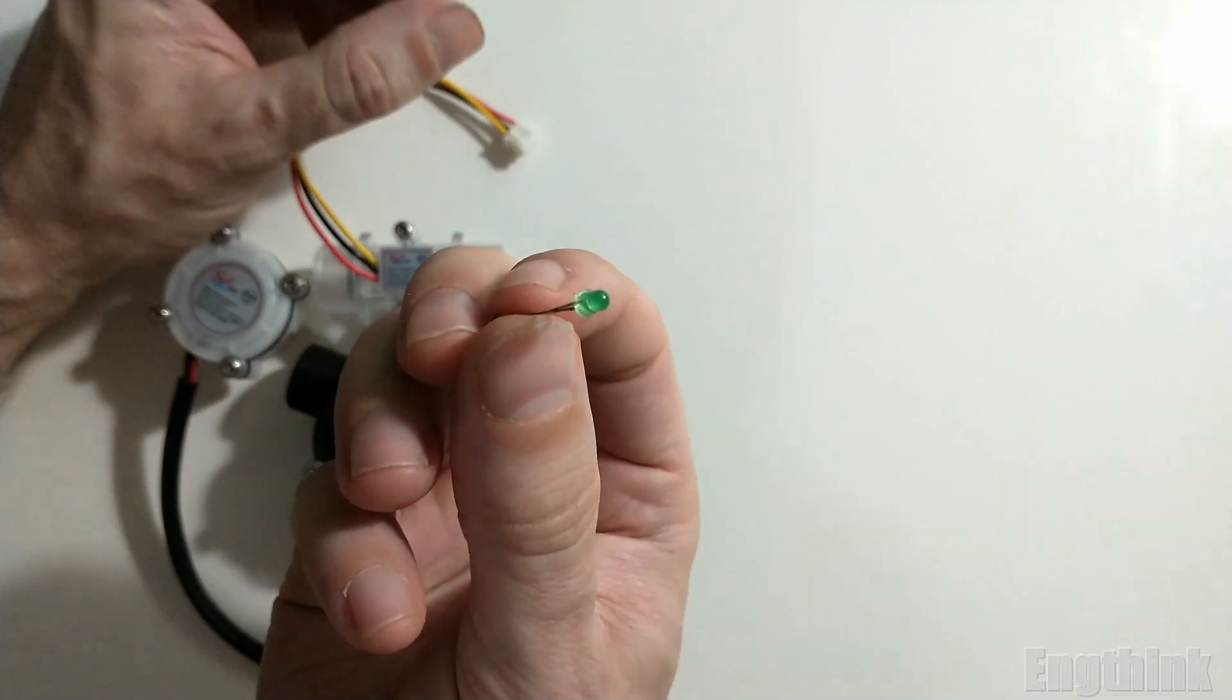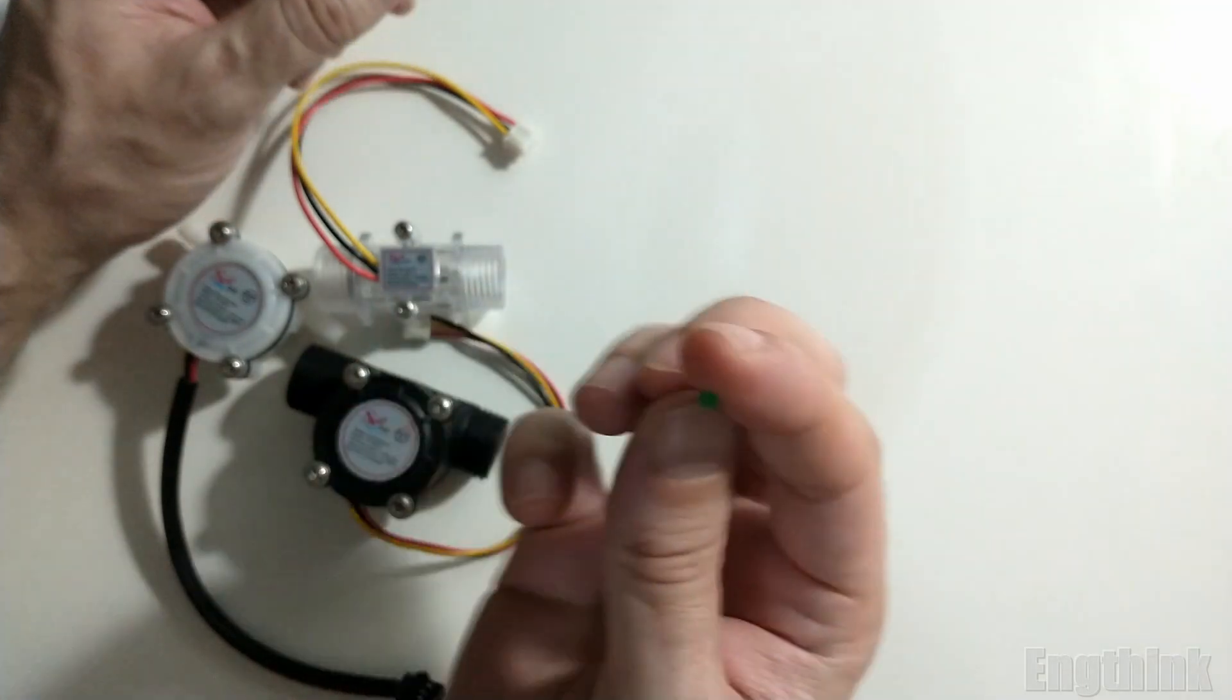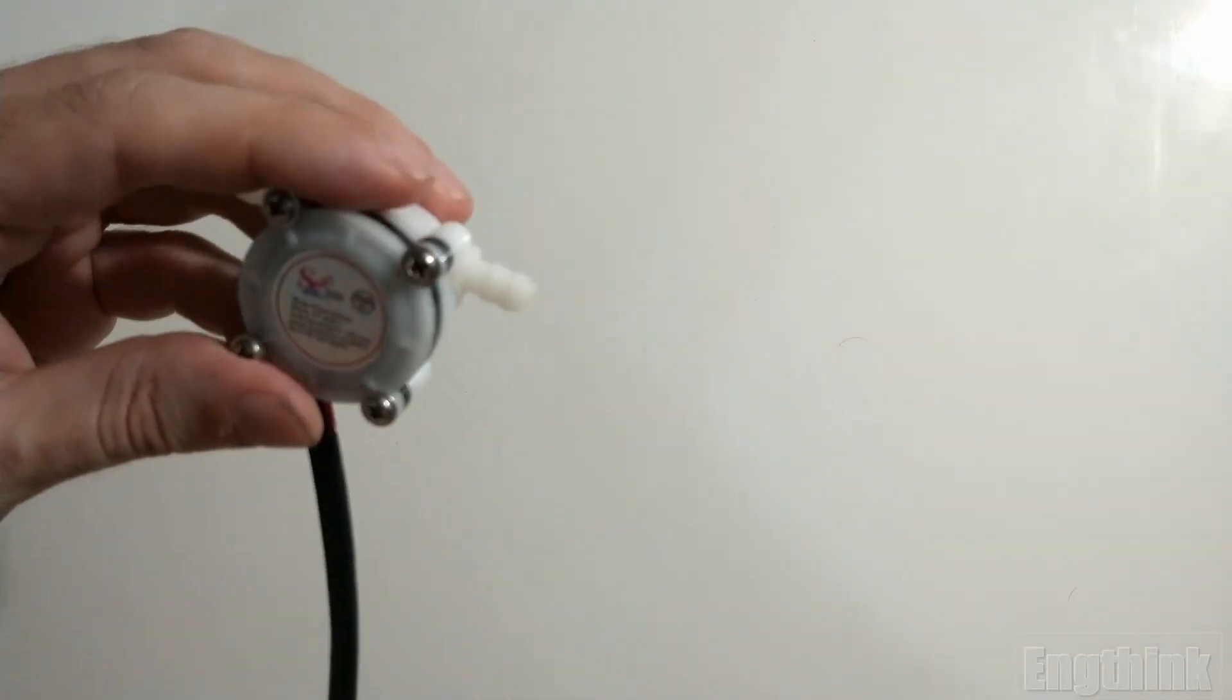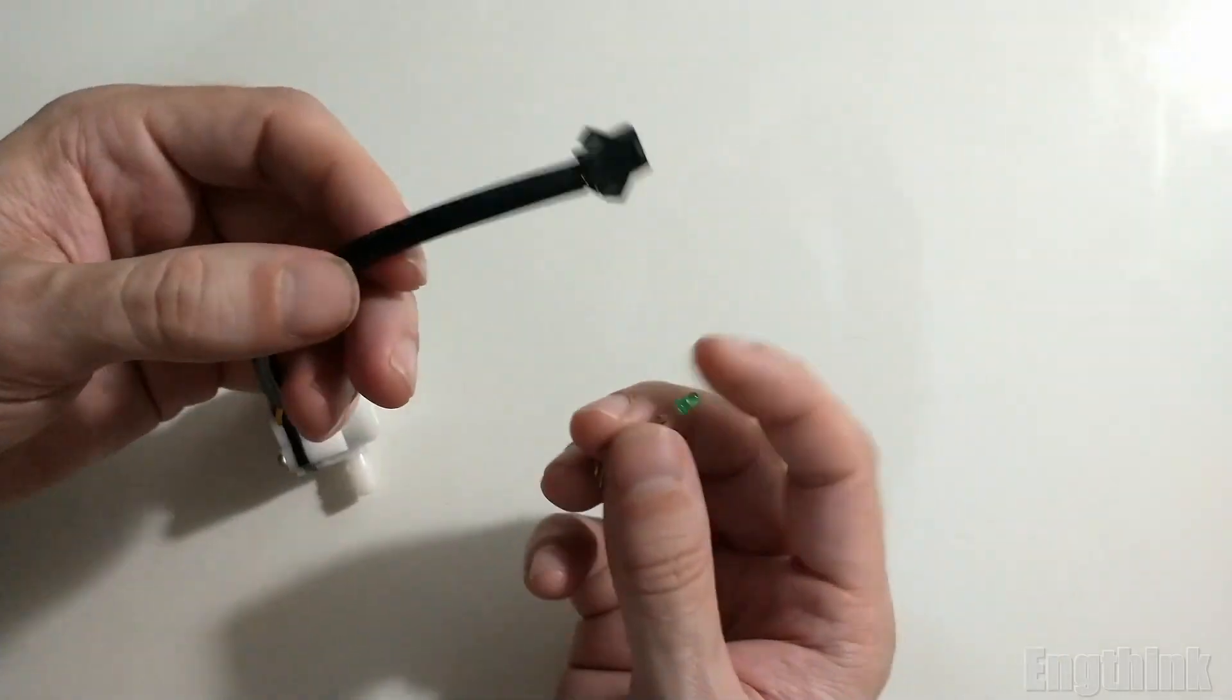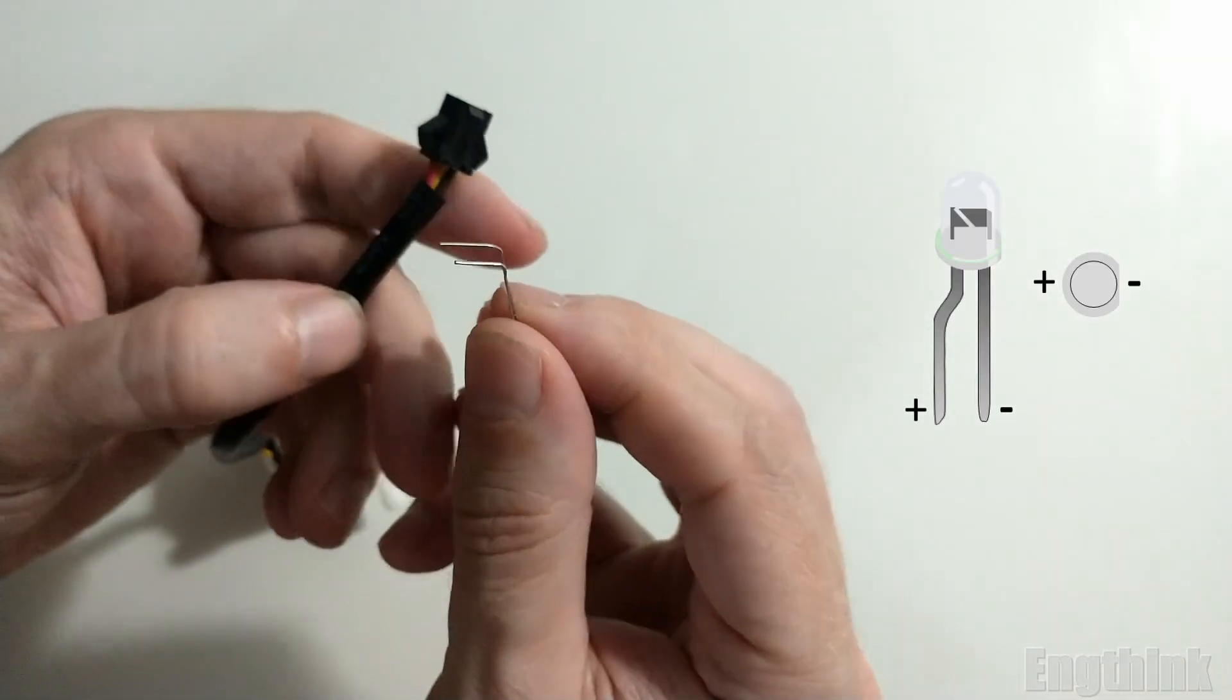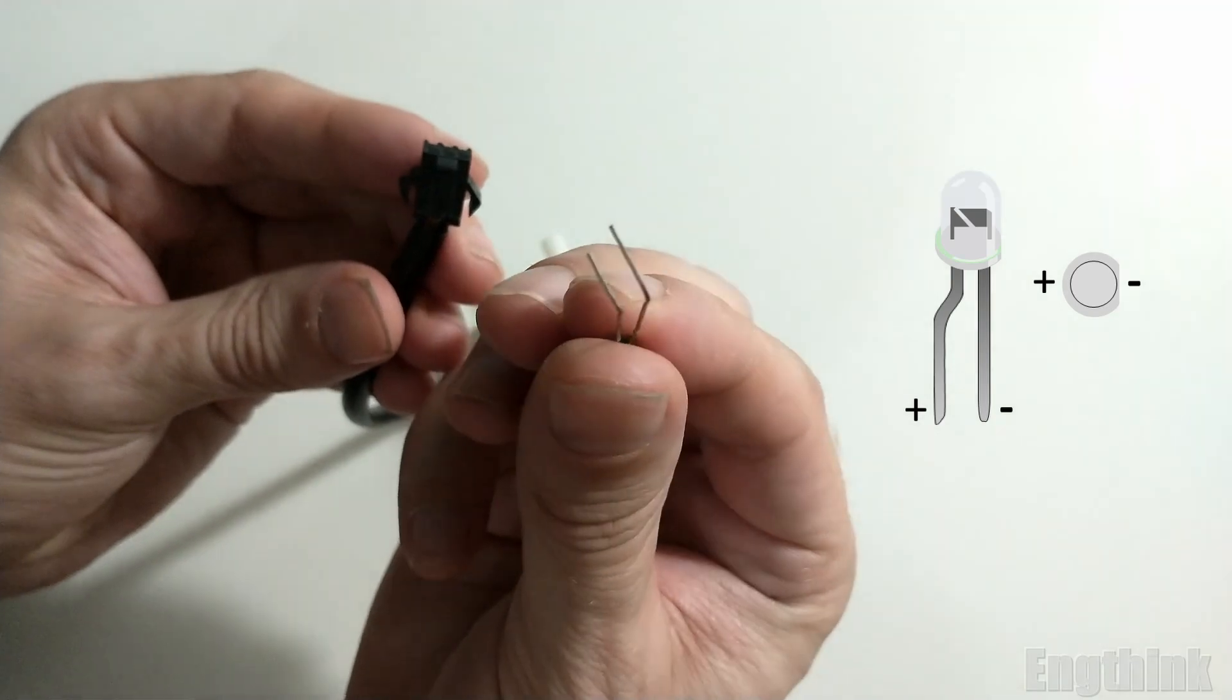This LED that I am using has the long leg as the positive pole and the short leg as the negative, before we connect the LED.